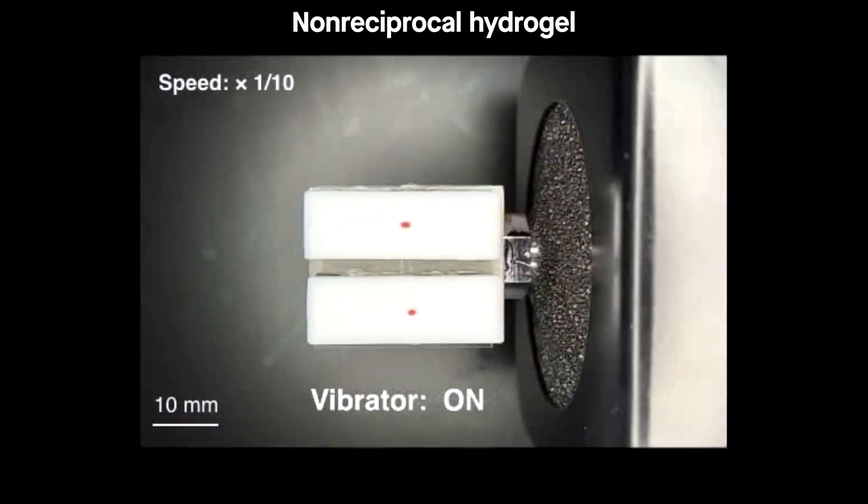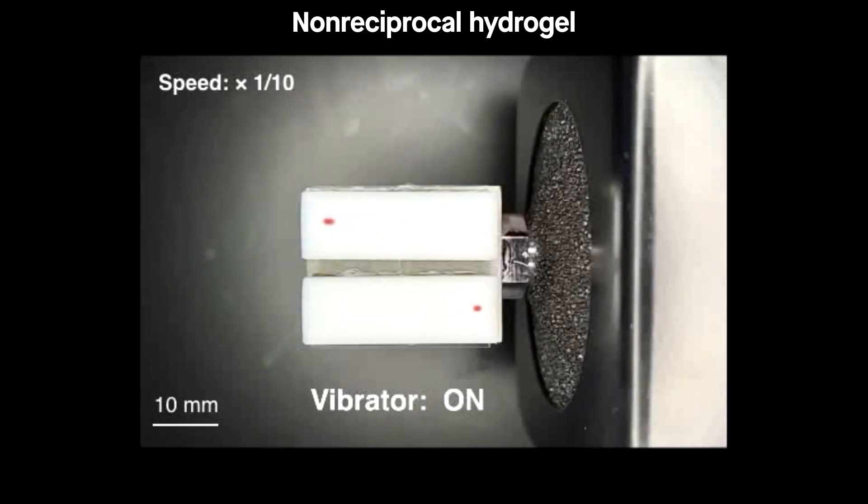Now imagine what would happen if you placed an object, like a bead, on the surface of the gel. Quickly shearing the material to the left and then to the right would place the bead just to the left of where it started.